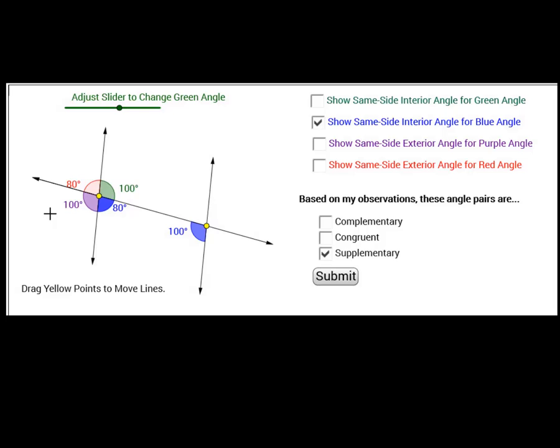Let me do the same side interior for the blue. Yes, those two add up for 180. Same side exterior, so they're outside, those also add to 180. And same thing, same side exterior for the red, those also add to 180. So since all these angle pairs add to 180, I'm going to conclude that they are supplementary.